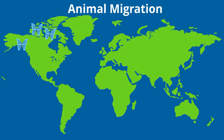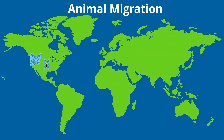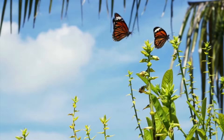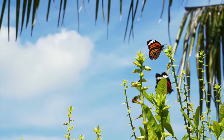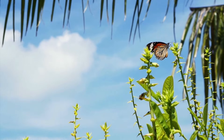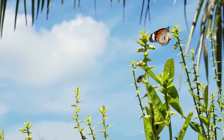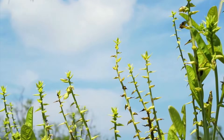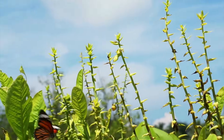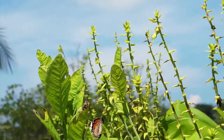Insects even migrate. Some winged insects such as locusts and other flying insects like butterflies migrate every year. The monarch butterfly migrates from southern Canada to a warmer climate in central Mexico where they spend the winter and mate.